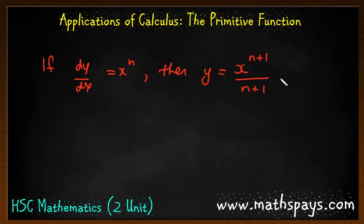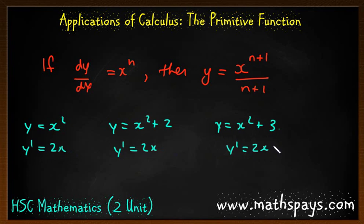Now there is a slight issue which I haven't mentioned. What's the problem with this? If I start off with y equals x squared, and y equals x squared plus 2, and y equals x squared plus 3, let's find the derivative. So y dash equals 2x, y dash equals 2x, y dash equals 2x. Do you see a problem with this?